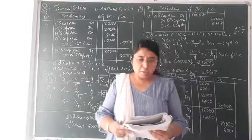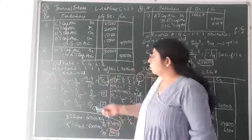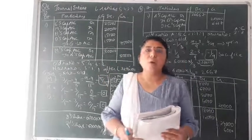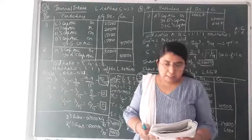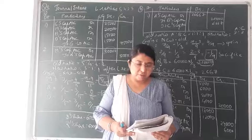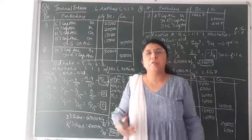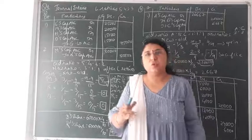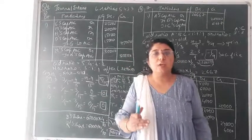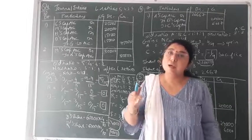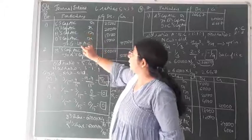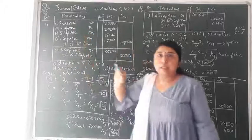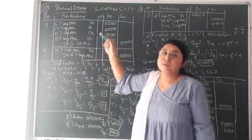L, M, N and O are partners sharing profit and loss in the ratio of 5:4:3:3. You can see the old ratio I have written on the board — 5:4:3:3. Now partner L is retiring. At the time of retirement of L, goodwill appears at Rs. 75,000 in the books of the old firm. This goodwill is to be distributed amongst all the partners including the retiring partner, because this goodwill was earned before the retirement of partner L.